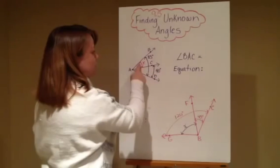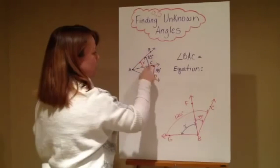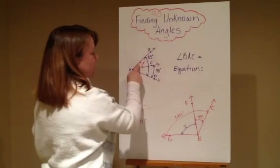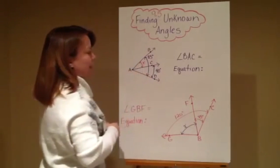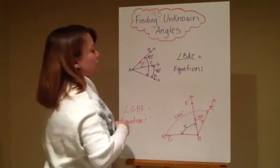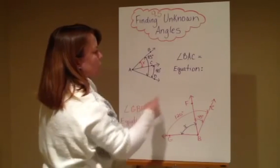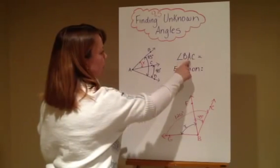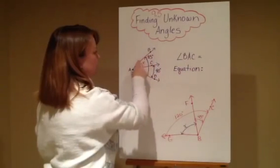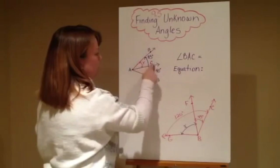Now, your unknown is going to be this angle right here that I put in a different color, and we're going to call that angle X, or that's what we're looking for, to form our angle BAC. So this is the angle that we don't know right now.